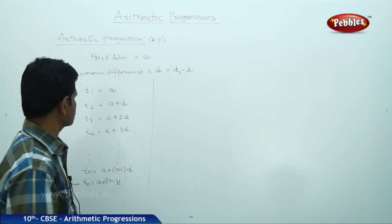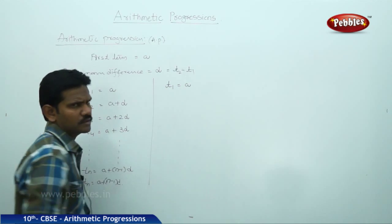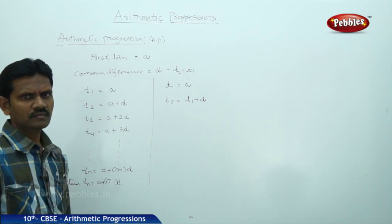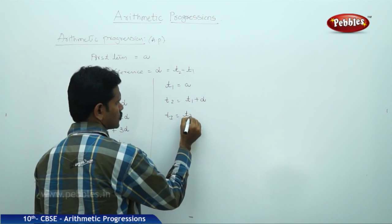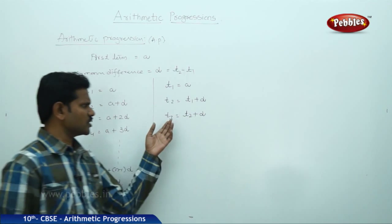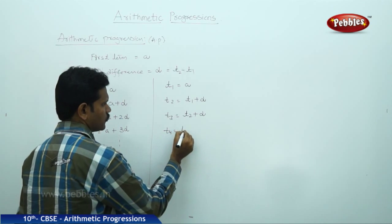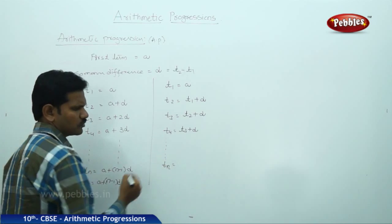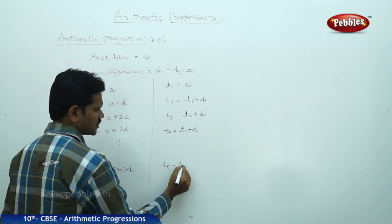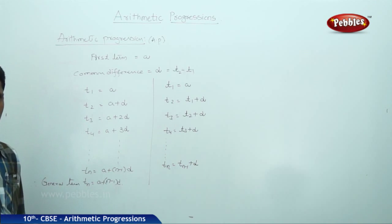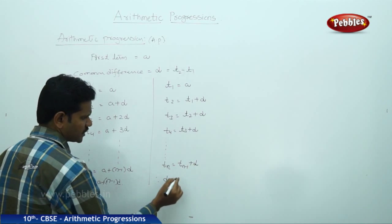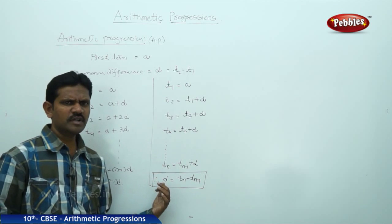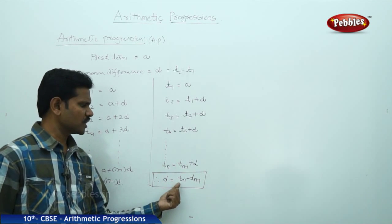We can also represent the arithmetic progression recursively: t1 equals a; t2 equals t1 plus d; t3 equals t2 plus d; t4 equals t3 plus d. In general, tn equals tn minus 1 plus d, since each term's preceding term is tn minus 1. Therefore, the formula to find the common difference is: d equals tn minus tn minus 1.